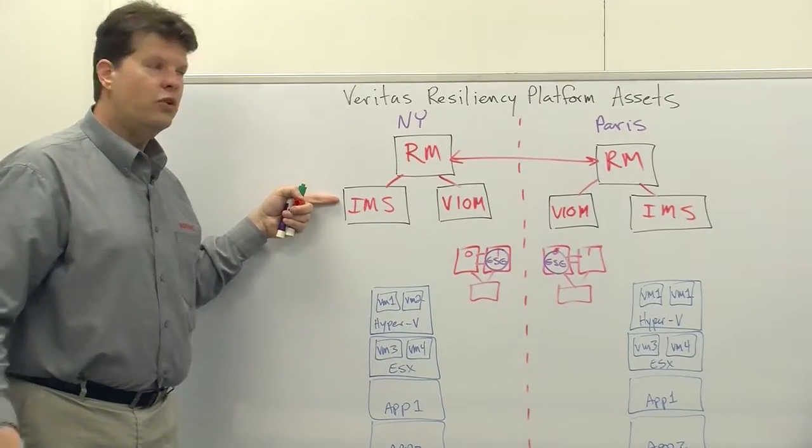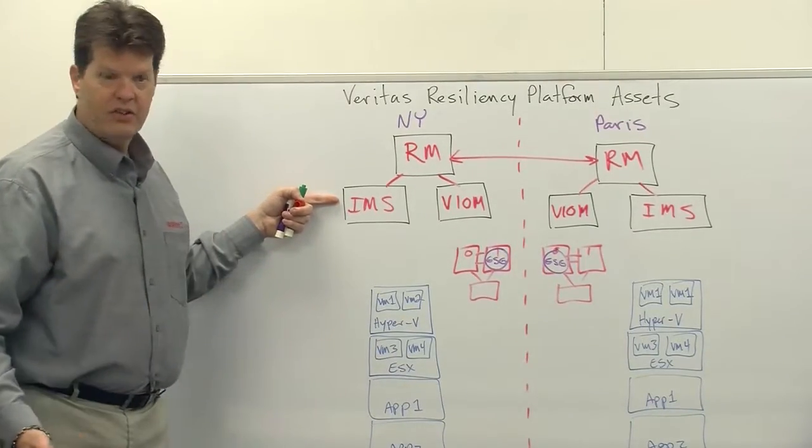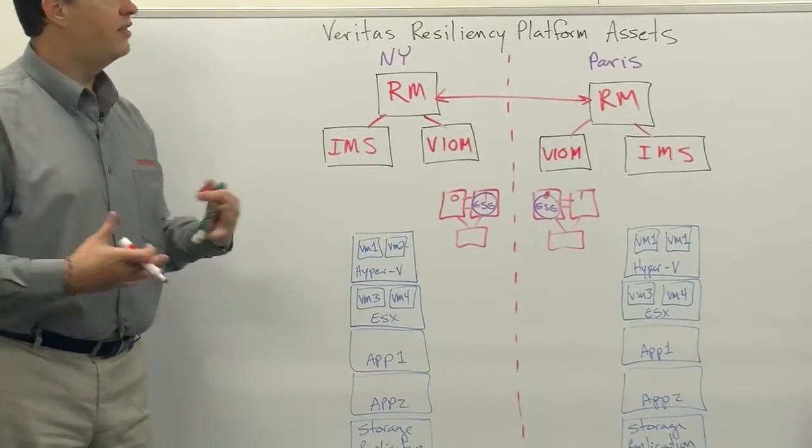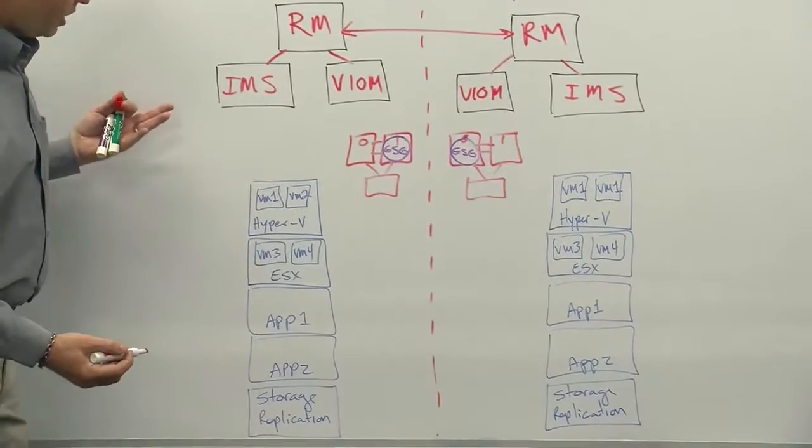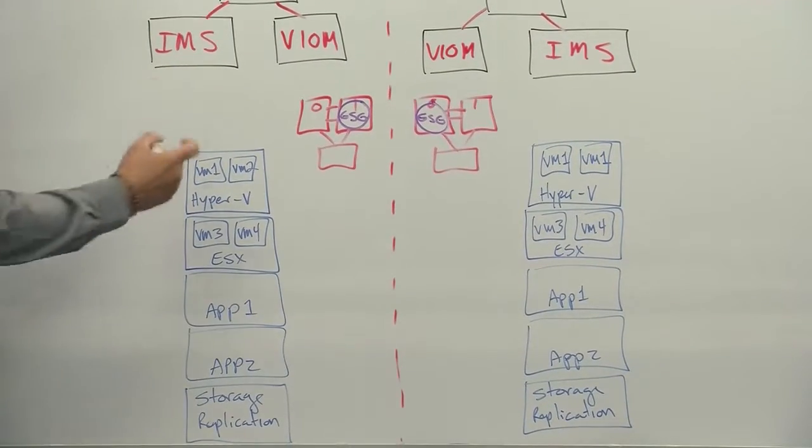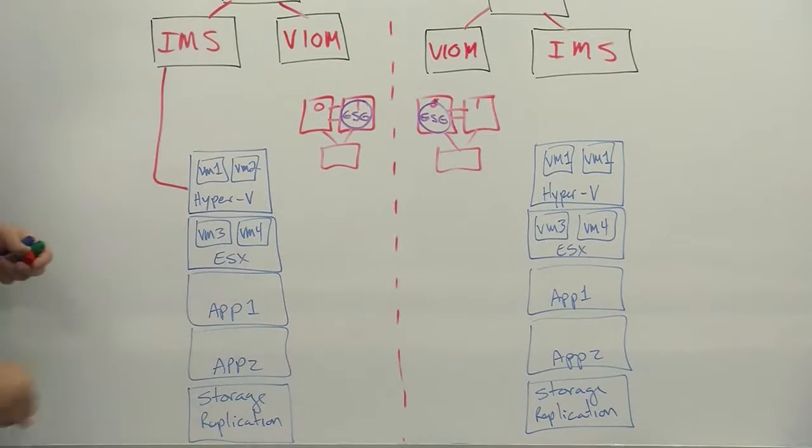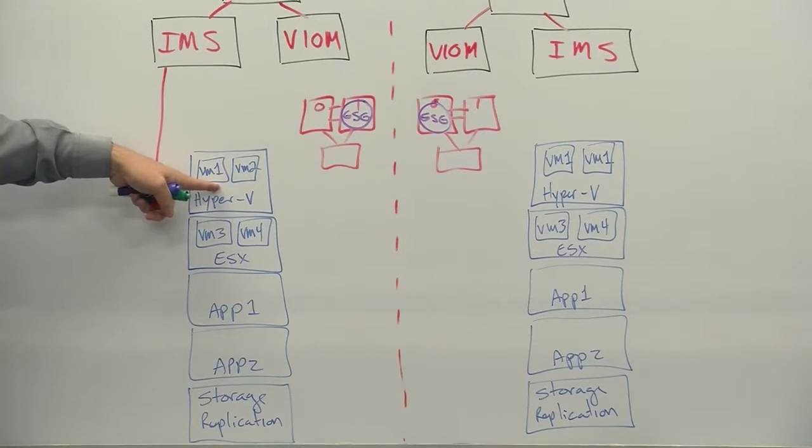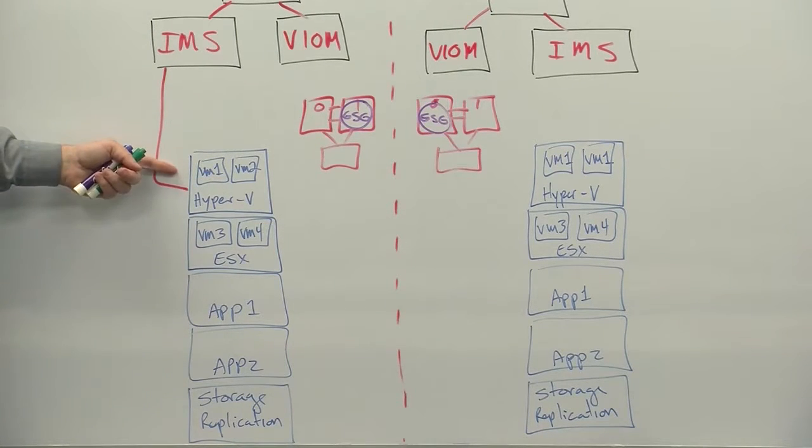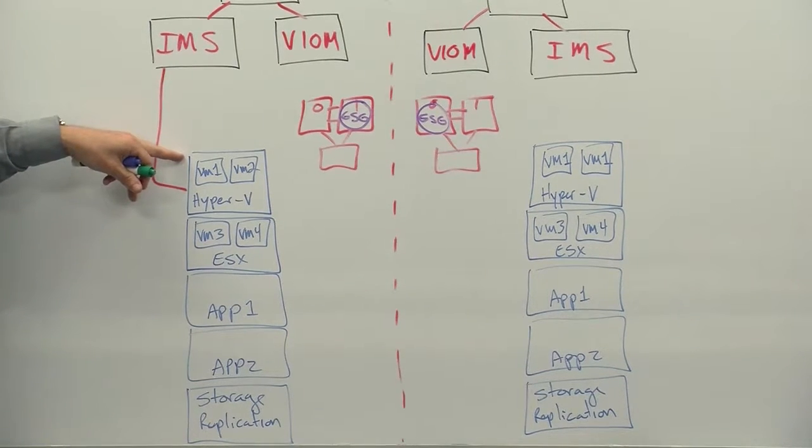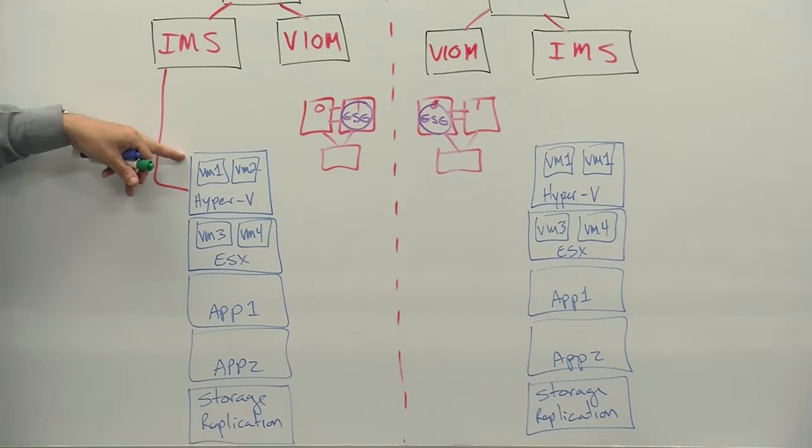Through the infrastructure management server, we'll perform our discoveries of the individual components that we want to have under VRP control. So the various components, or what we refer to as assets, are Hyper-V servers where we'll discover that it is a Hyper-V server. Of course, this would be a Windows box. And we'll discover all the associated virtual machines that are running on that machine, as well as the type of storage it's using and replication.